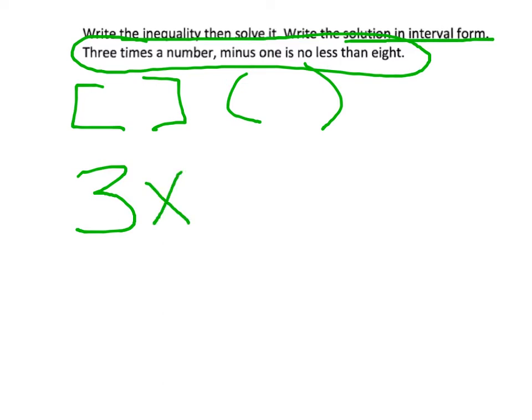It then says minus one, is no less than eight, so we know there's eight. In our sentence, when it says no less, it is talking about greater than or equal to. It is saying no less because this whole 3x minus one is not going to be less than eight.